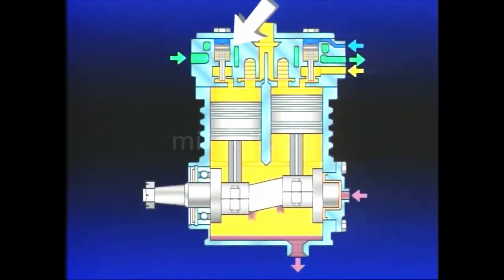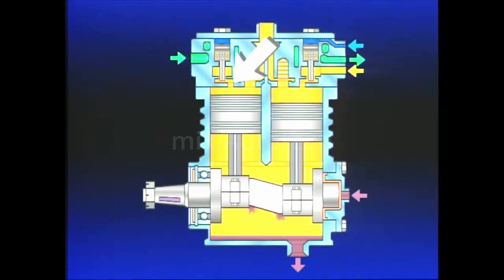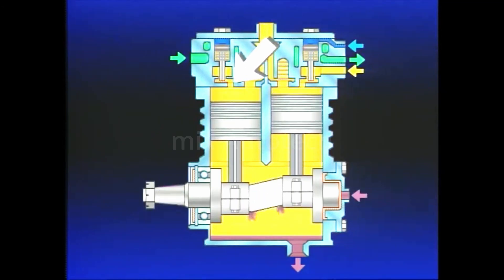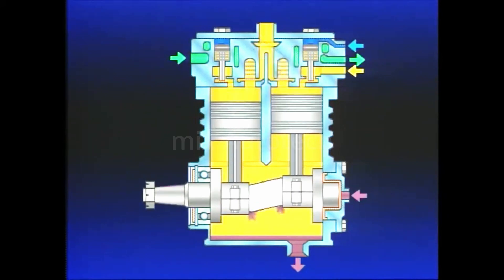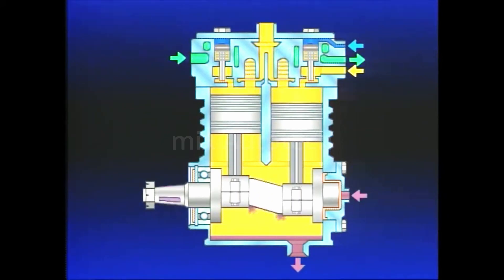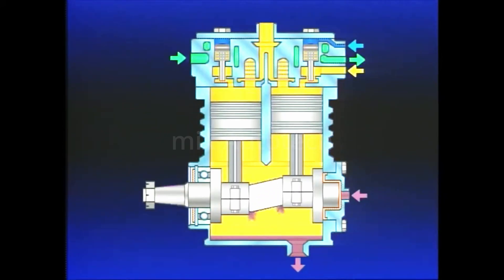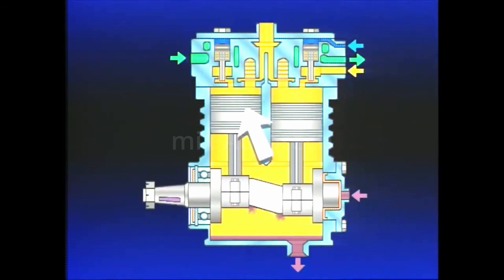With the compressor unloaders pressurized, air enters and leaves the cylinder bores through the open inlets and air compression ceases. Because the pistons are 180 degrees opposed, air is shuttled from one cylinder to the other as the pistons move up and down.